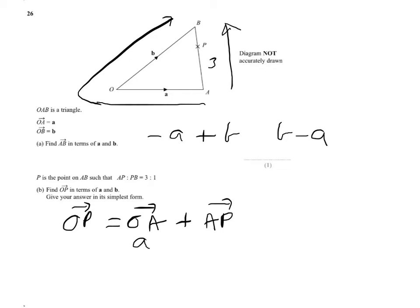Now the ratio is 3 to 1. So basically A to P is 3 quarters of A to B.